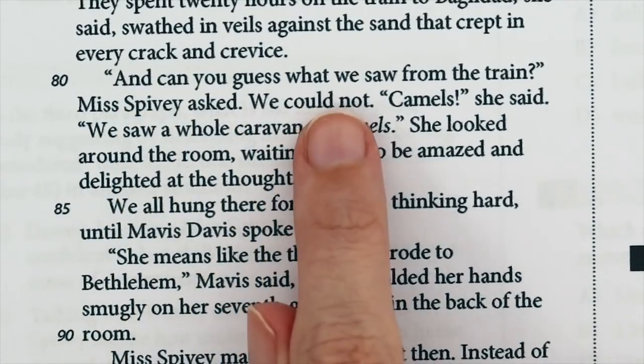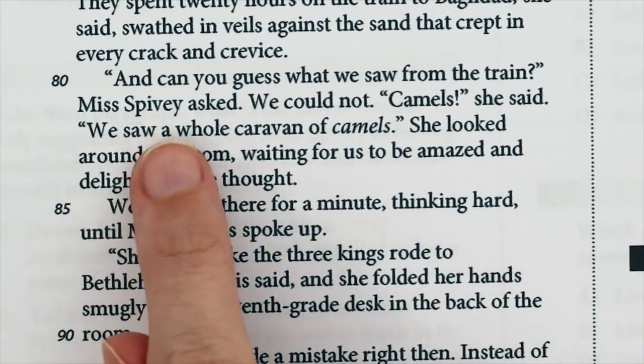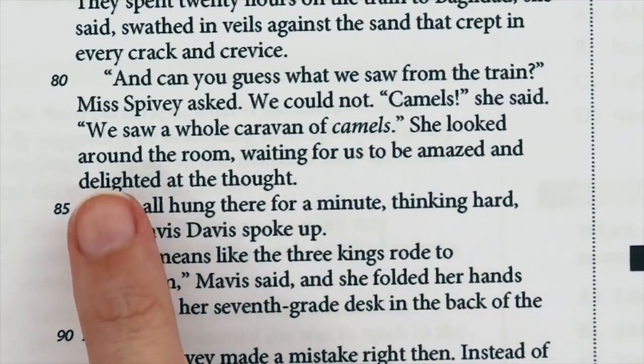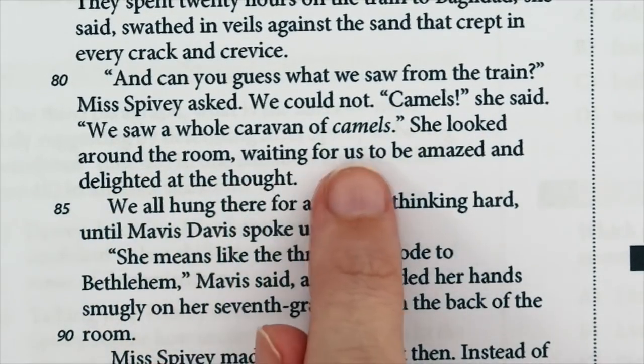Question 10 asks which sentence is the best evidence that the students are baffled by the teacher's story? And can you guess what we saw from the train? Miss Spivy asked. We could not. Camels, she said. We saw a whole caravan of camels.